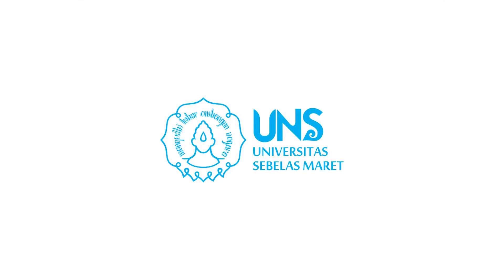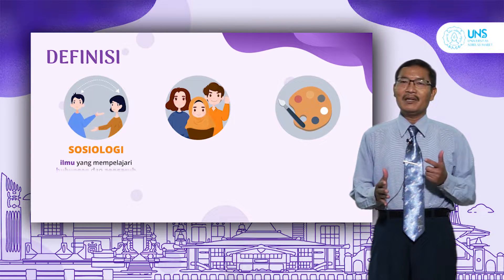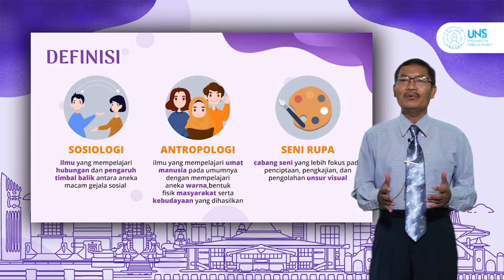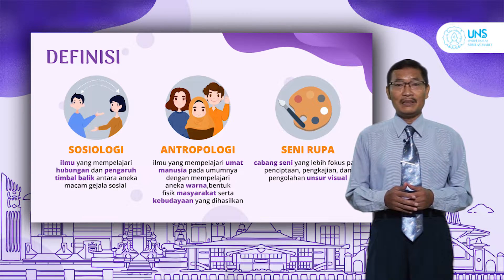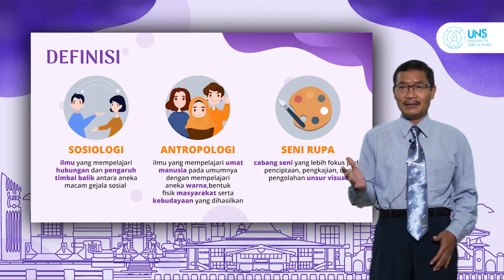Pada kali ini saya akan menyampaikan materi kuliah tentang Sosiologi Antropologi Seni Rupa. Ada tiga kata kunci di sini: yang pertama adalah Sosiologi, yang kedua Antropologi, yang ketiga adalah Seni Rupa. Satu sama lain ini saling berrelasi, saling terikat.